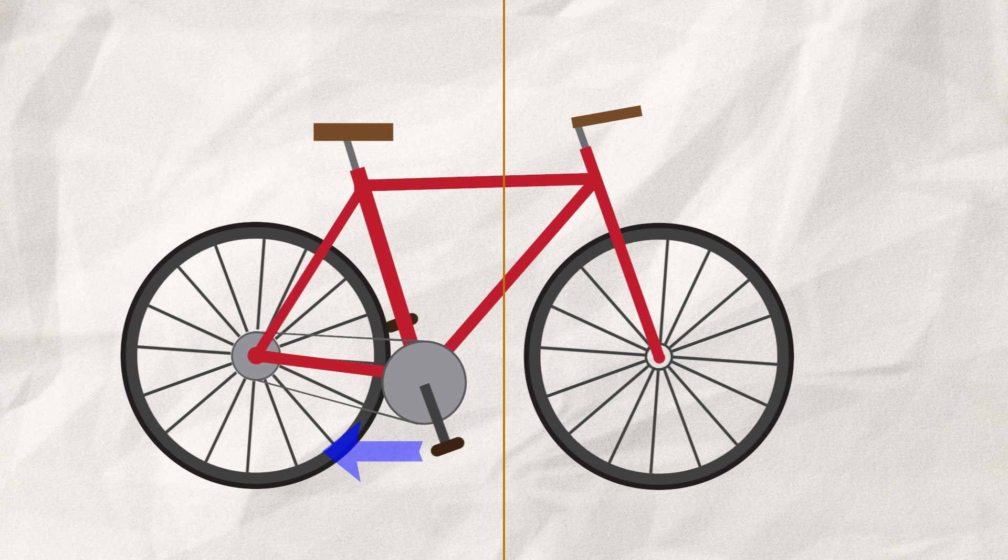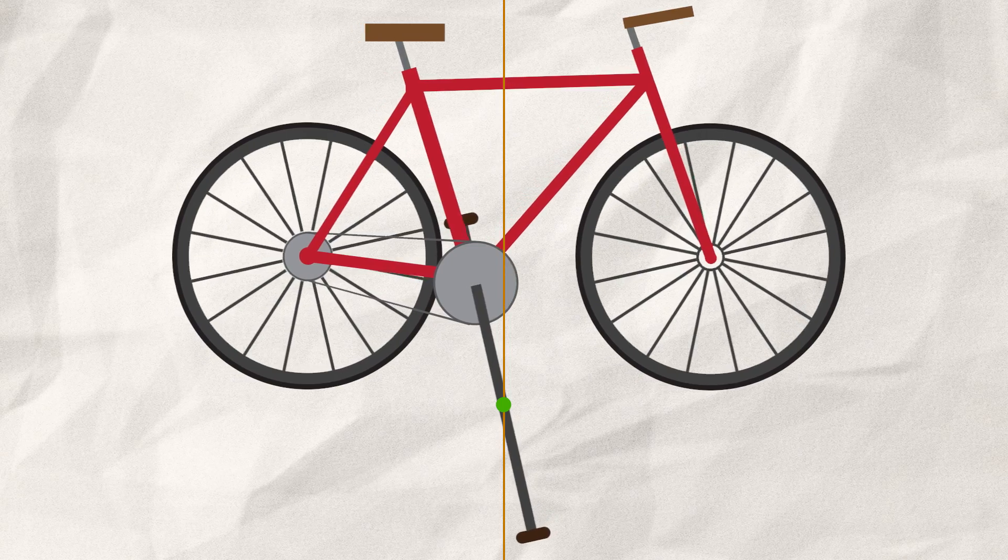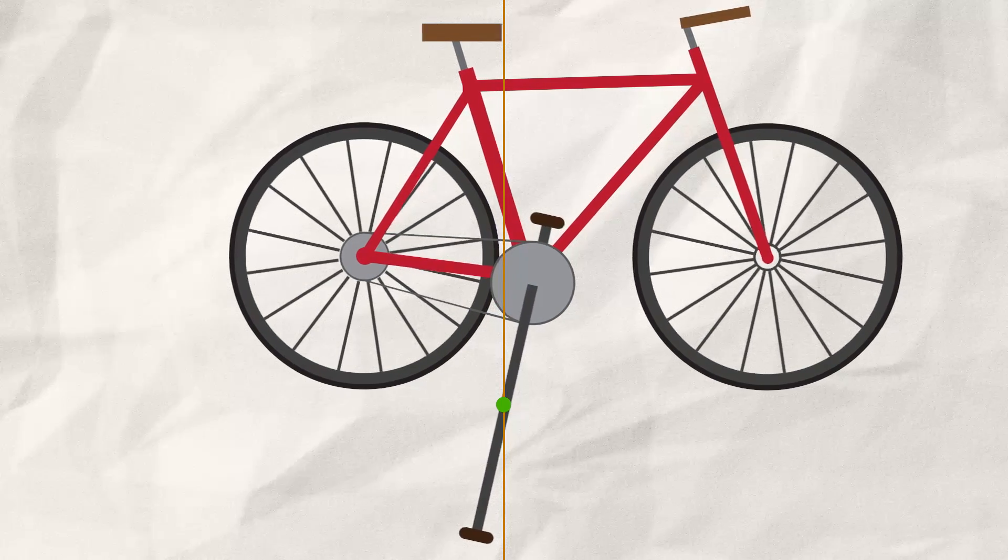Since this problem is a little tricky to grasp, let's demonstrate it in a different way. This time, I make my pedal as long as I want it to be. When I start moving back and forth, you can see that there is a certain pivot point marked by a green dot, a place where no movement occurs.